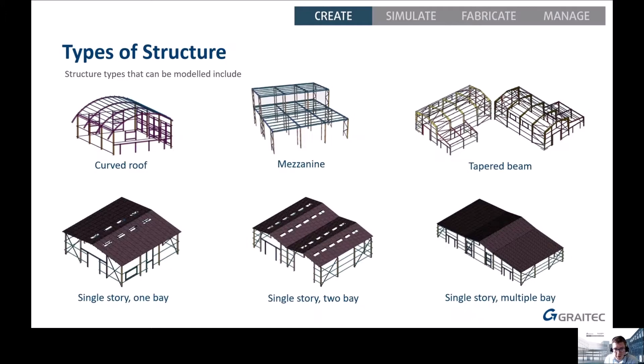The types of structure we can create with the Structure Designer include: curved roof structures, mezzanine floors, tapered beam structures, single storey one-bay structures, single storey two-bay structures — which gets into the agricultural-type buildings — and single storey multiple-bay structures. We can also do multi-storey one-bay, two-bay, or multiple-bay structures. All the pictures shown are structures created with just one dialogue box using the Structure Designer.